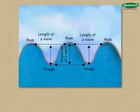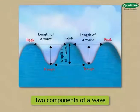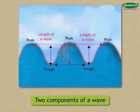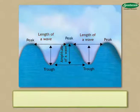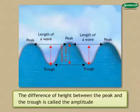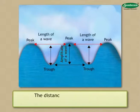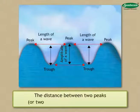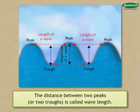You can easily identify the peak and trough as two components of a wave. With the help of these two components, the length and amplitude of waves can be expressed. The difference of height between the peak and the trough is called the amplitude of the wave. The distance between two peaks or two troughs is called wavelength.